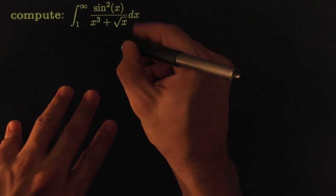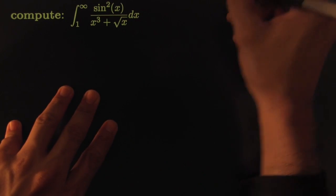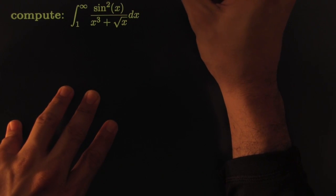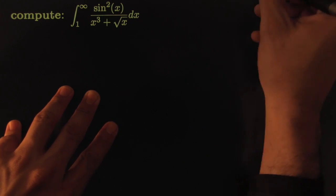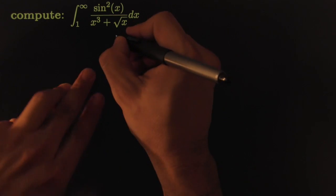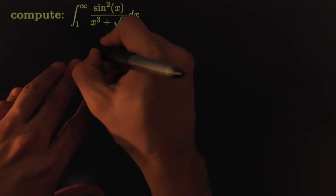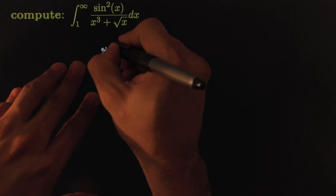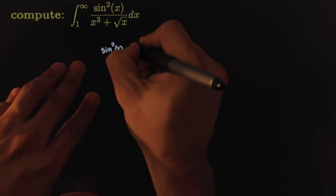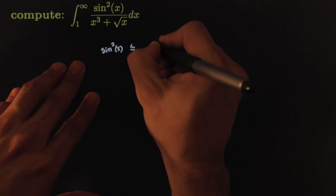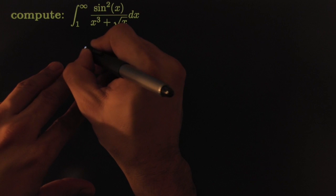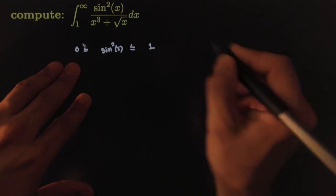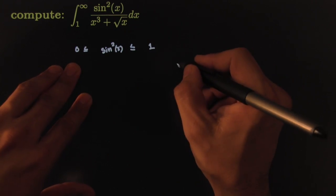Let's try our luck with this one. We're going to use the same technique — it's called the comparison test. You can compare with something that you can handle, and then all will be good. Here's the comparison: I know that sine squared of x is always less than or equal to 1, and of course it's positive, or non-negative.